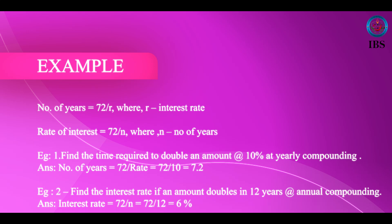So if a person is investing an amount of 1 lakh rupees at yearly compounding at 8%, this 1 lakh becomes double in 9 years. Suppose he is getting a rate of 24%, then this amount becomes double in 3 years, because 24 into 3 is 72. In the JIB exam, a typical question would be: what is the time required to double an amount if the rate of interest payable is 10% at yearly compounding? You divide 72 by the rate of interest — so 72 divided by 10 gives you 7.2 years.